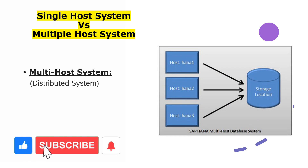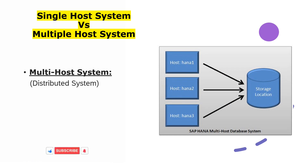Now let's talk about the multi-host system. In the diagram for multiple hosts, you can see a system — like a complete system — where there are multiple HANA hosts. There is one storage location to which all the hosts are connected. So in one SAP HANA system, you have multiple HANA hosts with the same SID.